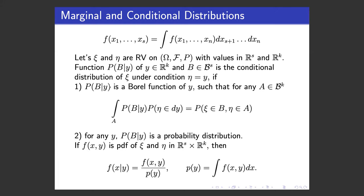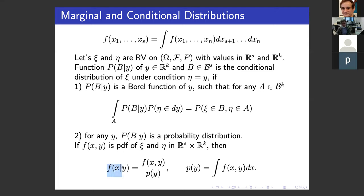The conditional distribution, in the case of continuous variables, is defined as the fraction of the joint distribution and the marginal distribution. Now we will see how it works on real examples.